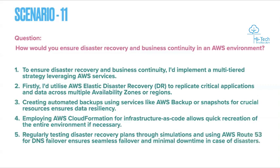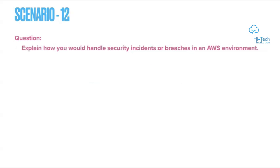Fifth, regularly test the disaster recovery plan through simulations, and use AWS Route 53 for DNS failover to ensure seamless failover and minimal downtime in case of disaster. Don't wait for a disaster to happen — every quarter or every six months, conduct DR testing. Try deploying backups and performing DNS cutover or failover as practice, so that when an actual DR event occurs, you can quickly execute the restore process. Answering any three of these five steps would be appreciated in an interview, but covering all five is highly recommended.